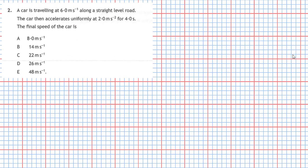Question 2 from section 1 of the 2019 National 5 Physics Examination: A car is travelling at 6.0 metres per second along a straight level road.